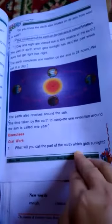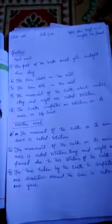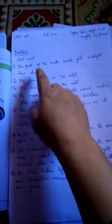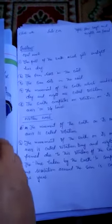The part of the earth which gets sunlight is called day. The part of the earth which gets sunlight is called day.